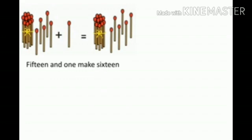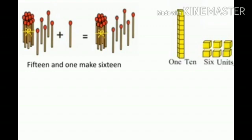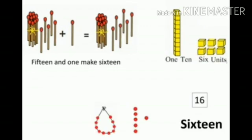Here, 1 bunch of math sticks is there — that is, 10 math sticks. With 5 math sticks, 15 plus 1 math stick equals 16 math sticks. 15 and 1 make 16. The 10-group of blocks is 1 ten and 6 blocks is 6 units. 10 bits of the string is 1 ten and 6 bits is 6 units. That is, 16, and the spelling of 16 is S-I-X-T-E-E-N.